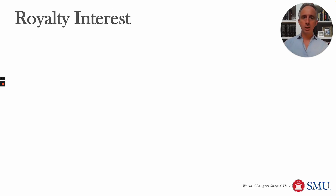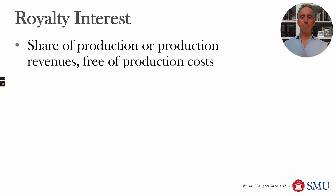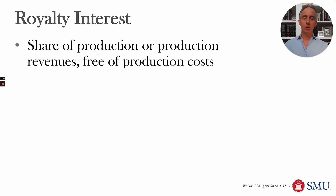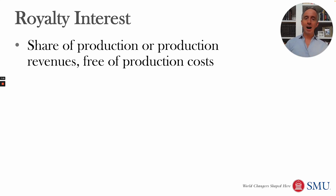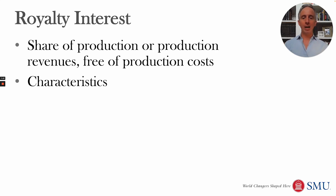The royalty interest that the landowner receives is a share of production or production revenues, and it does not include production costs. So the landowner gets one-eighth of production no matter how much it cost to produce the oil and gas — even if the oil and gas company lost money, the landowner still gets their share. This means the landowner wants as much production as possible, while the oil and gas company has to think more carefully about costs.